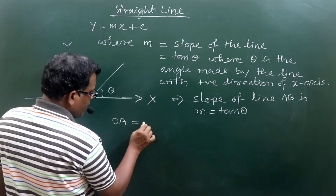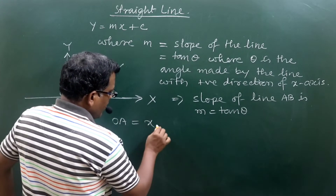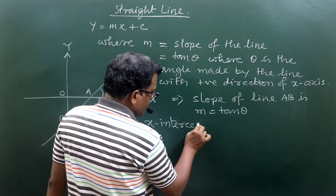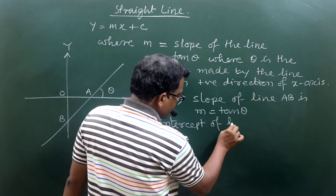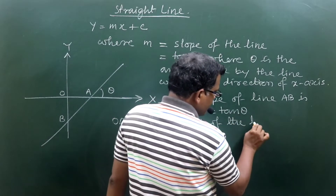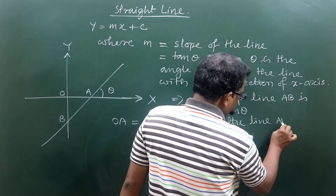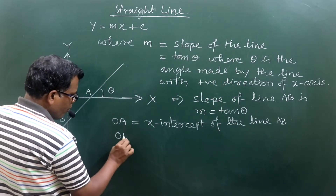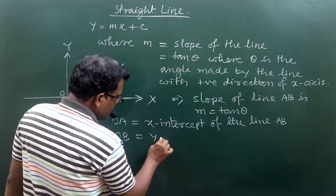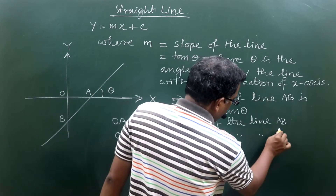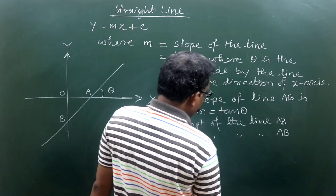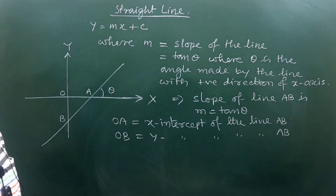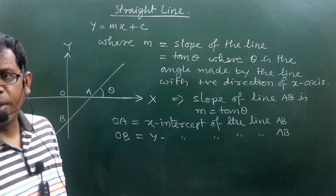OA — that is from the origin to the x-intersecting point — is called the x-intercept of the line AB. Similarly, OB is called the y-intercept of the line AB.